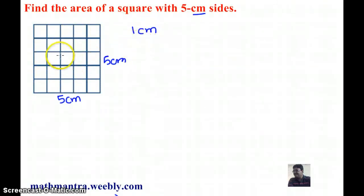Now in order to find the area of the square with 5 centimeter sides, I need to count all these small squares. My area is equal to the number of squares that I have, and clearly I have 25 squares, so the area is 25